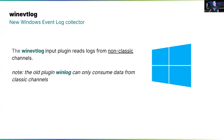For our Windows users, who are not a small amount — you might be surprised that most financial institutions run 100,000 services on Windows — they face the same challenge of how to collect log information from their systems. We used to have a plugin called Winlog, which allowed you to get logs from the Windows event log system, but it was limited to classic channels. Now, a new plugin called WinEBT Log allows you to pull and consume data from non-classic channels. Many companies and users have been expecting this, and I'm happy to say it's already out with 1.9.